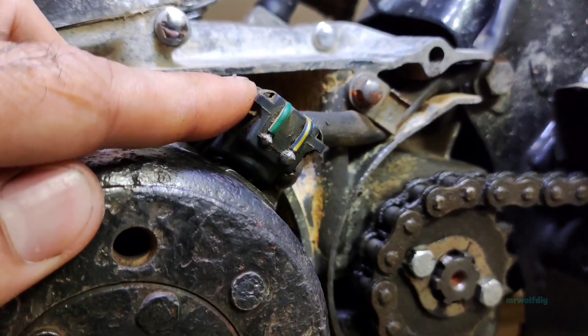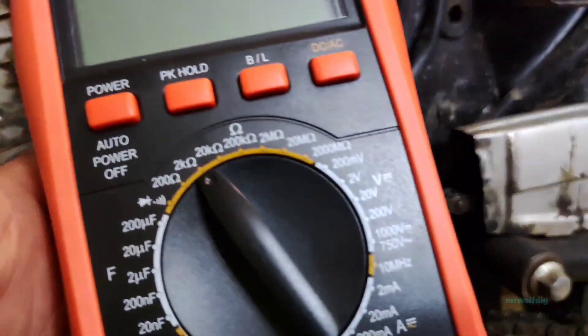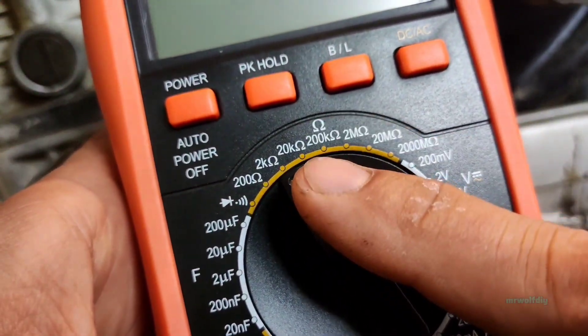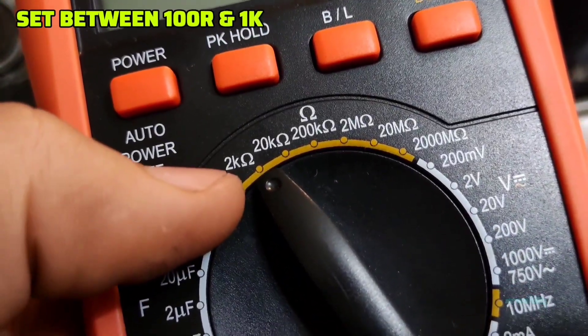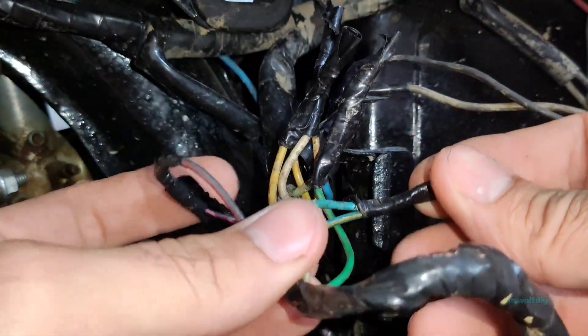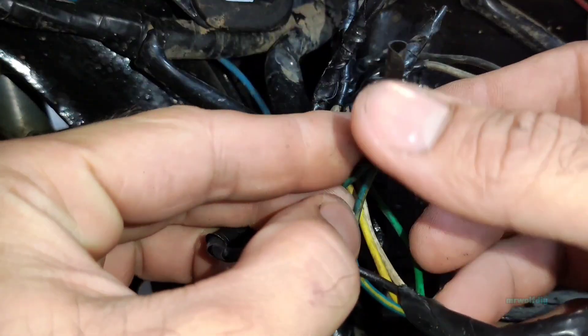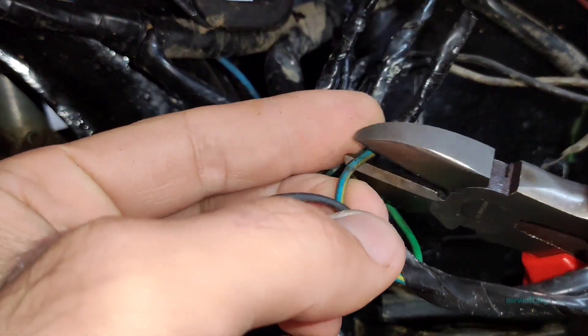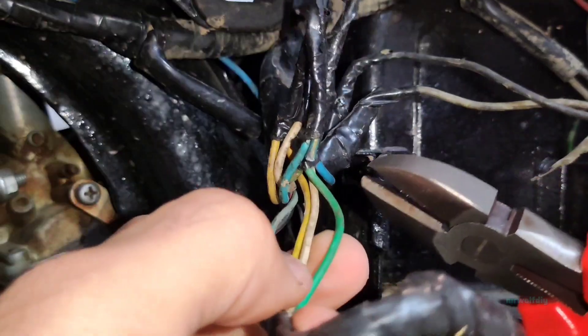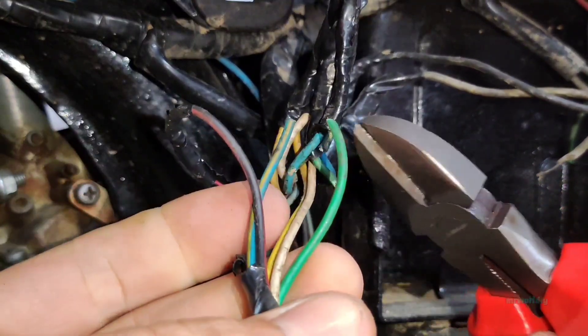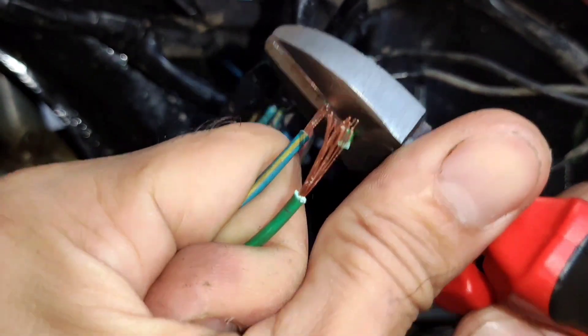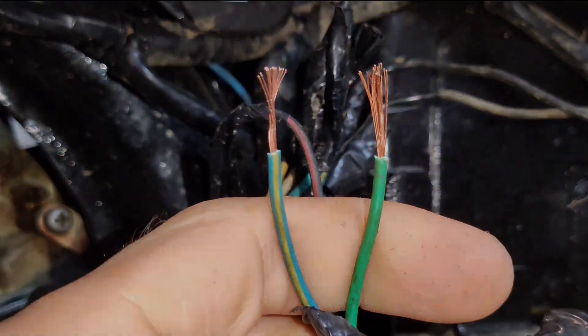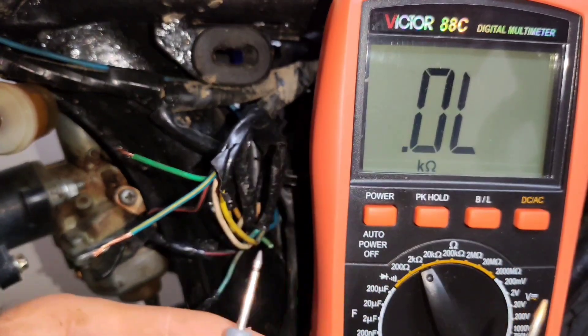To measure the pickup resistance, we need a multimeter. Set the multimeter to ohm setting. If it's manual range, set it between 100 and 1 kilo ohm. Turn on the multimeter. Now we must disconnect the pickup wire from the wiring. That's it.